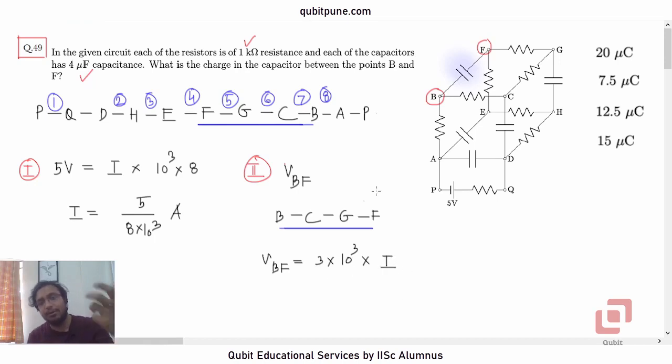We know that the potential drop between any two points is current multiplied by the resistance, that electrical resistance that is there in between the two points. V equals IR. Again the same formula, but this time we are calculating the potential difference or voltage drop. Have we calculated the current already? Yes, we have it. So it is 3 into 10 raised to 3 into 5 upon 8 into 10 to the power 3. Correct. 5 upon 8 into 10 raised to 3.